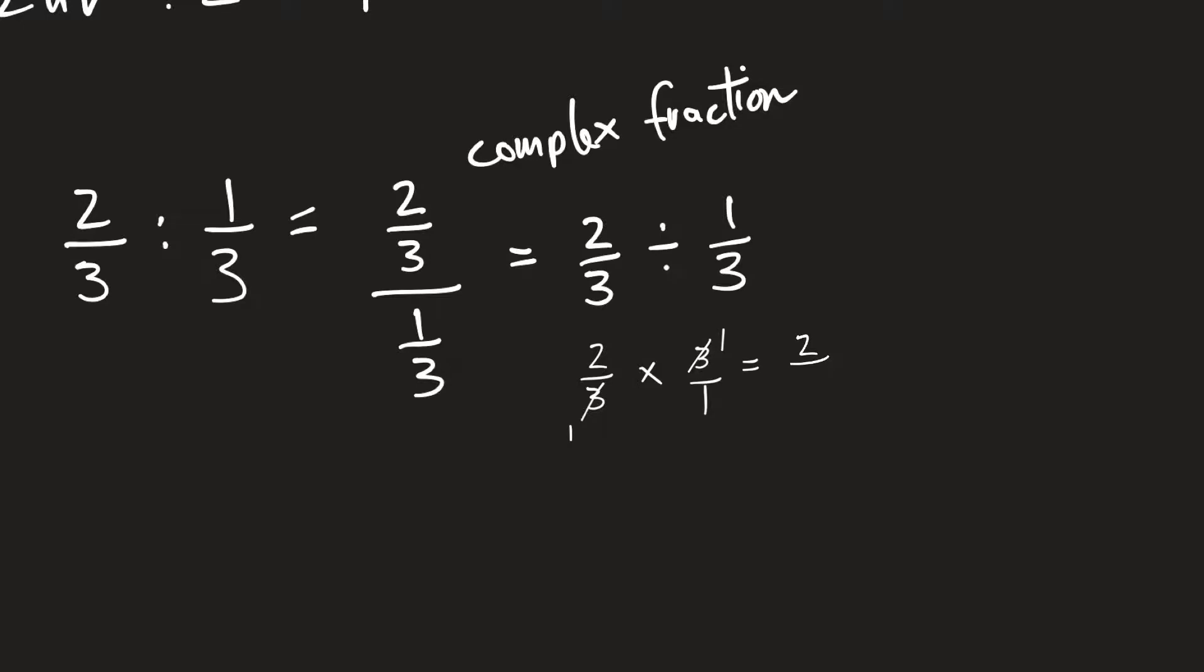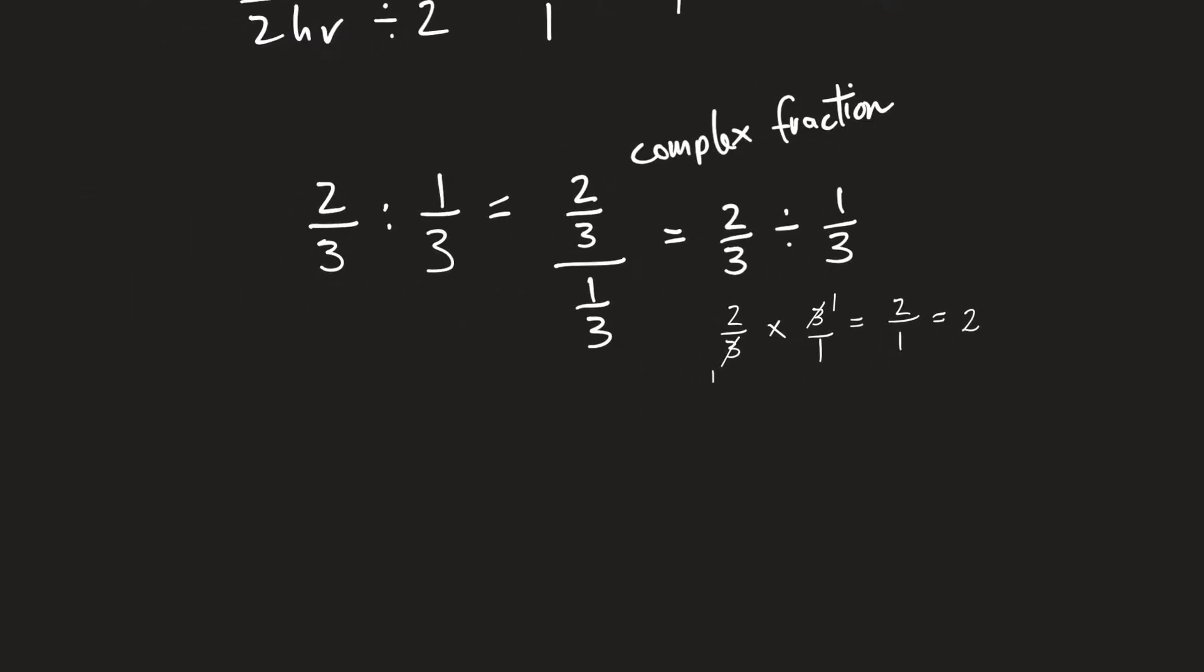One times one is one, and two divided by one is two. So what is the unit rate? Let's bring it back here. For this, you're asked, what is the unit rate of two-thirds to one-third? I did this, I did all my math, and I found that the answer is two. That is the unit rate.